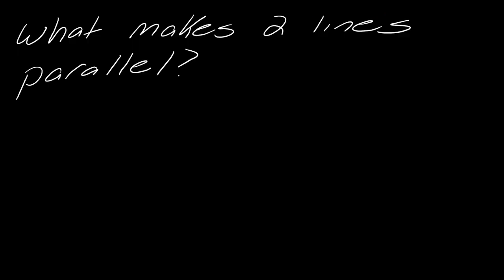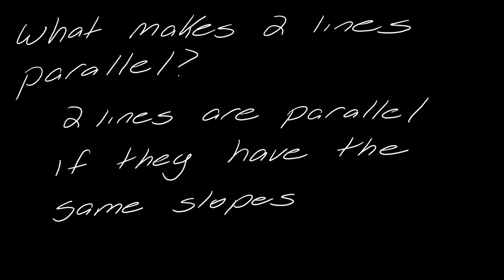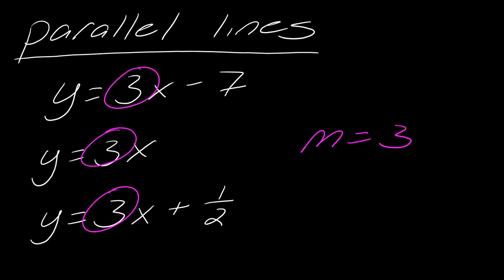So what makes two lines parallel? Usually when I bring up parallel lines, people think of just two lines that don't intersect. But from a mathematical standpoint, two lines are parallel if they have the same slopes. Here I have a bunch of lines that are all parallel to one another. You can tell basically instantly because these are in slope-intercept form, and in all of these the slope is three.